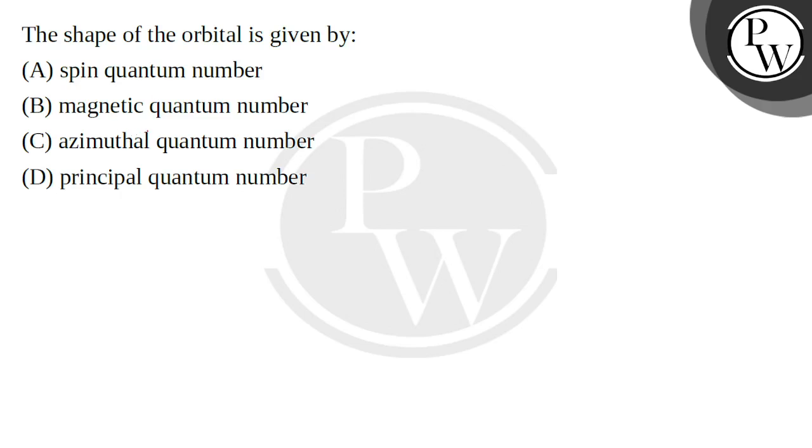Spin quantum number, magnetic quantum number, azimuthal quantum number or principal quantum number. So quantum numbers are integral numbers, which are given by an electron's address and its state. So we have 4 types of quantum numbers.